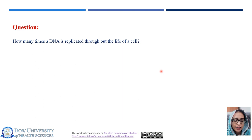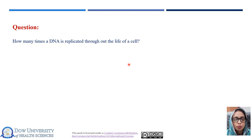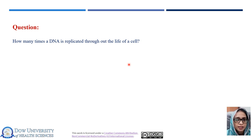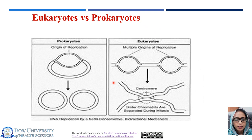How many times is DNA replicated throughout the life of a cell? During the conversion of one parental cell into two daughter cells, DNA is replicated only once — during the S phase of the cell cycle. The process of replication we have discussed is well conserved in all eukaryotes and prokaryotes.